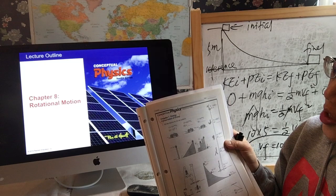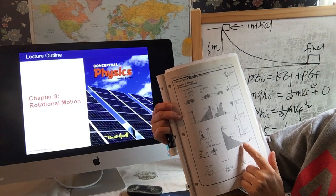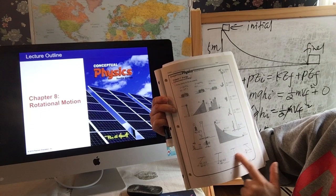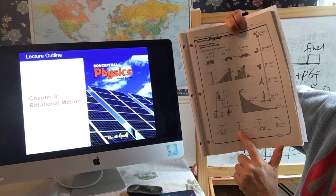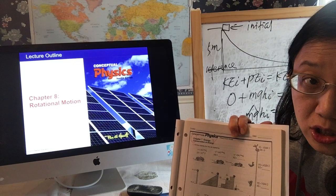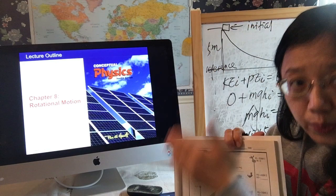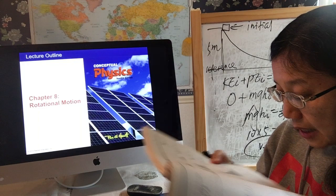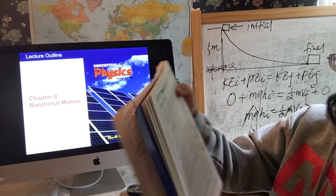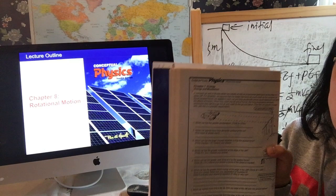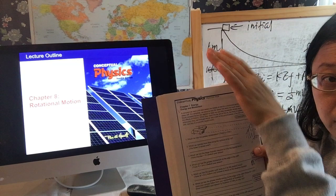On page 37, you can see applications of conservation of energy for different scenarios — someone in free-fall motion, and a pendulum. For the pendulum, potential energy converts to kinetic energy and back to potential energy, but the overall mechanical energy — kinetic plus potential — remains constant throughout.